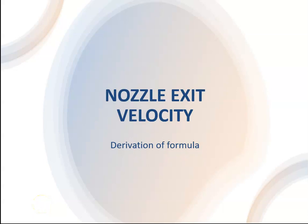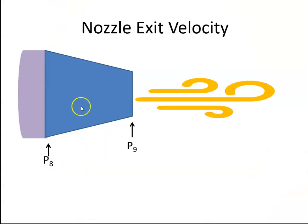We're going to derive an equation here to calculate the nozzle velocity at the exit of a nozzle. So this is our nozzle and we're going to say that this is station 8 and this is station 9.